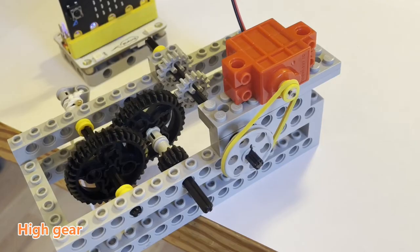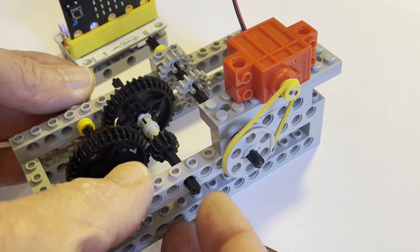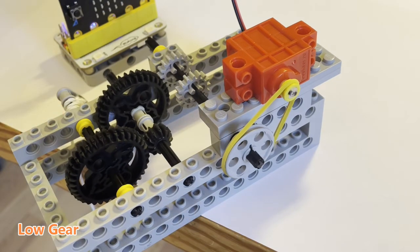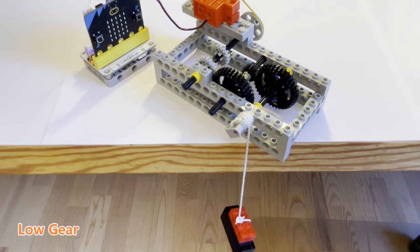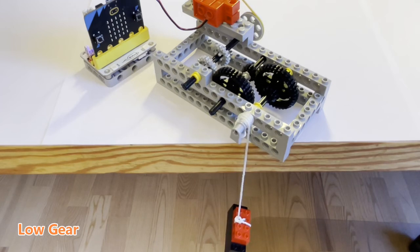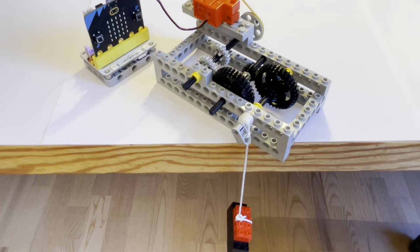But if we change to the high gear the rubber band slides around the small disc. The torque of the pointer is not large enough to lift the block. We therefore have to shift to the low gear again just like when a car has to drive up a steep hill.